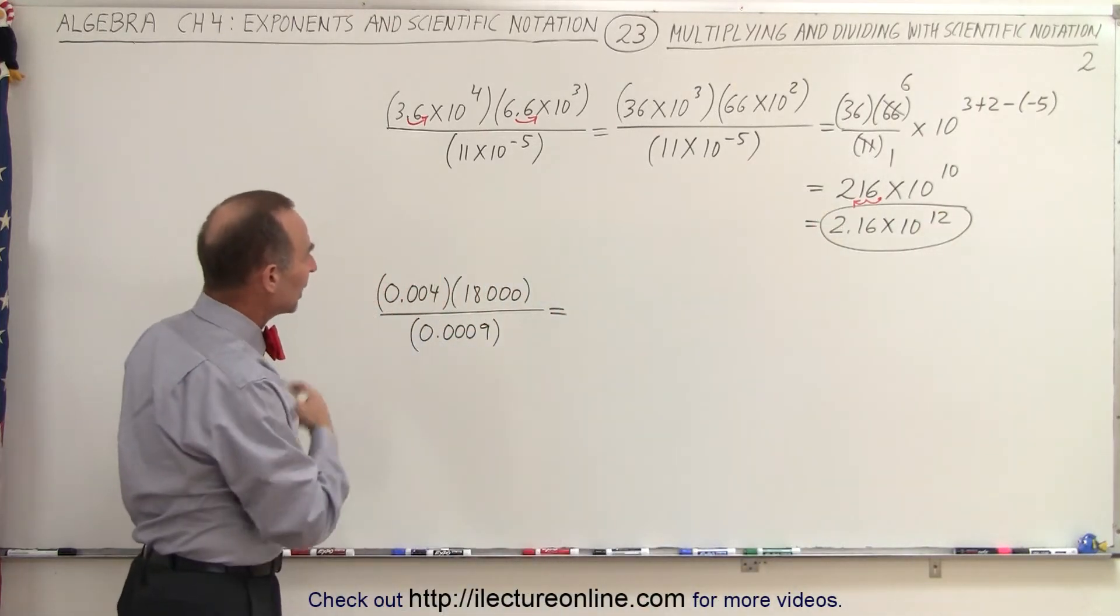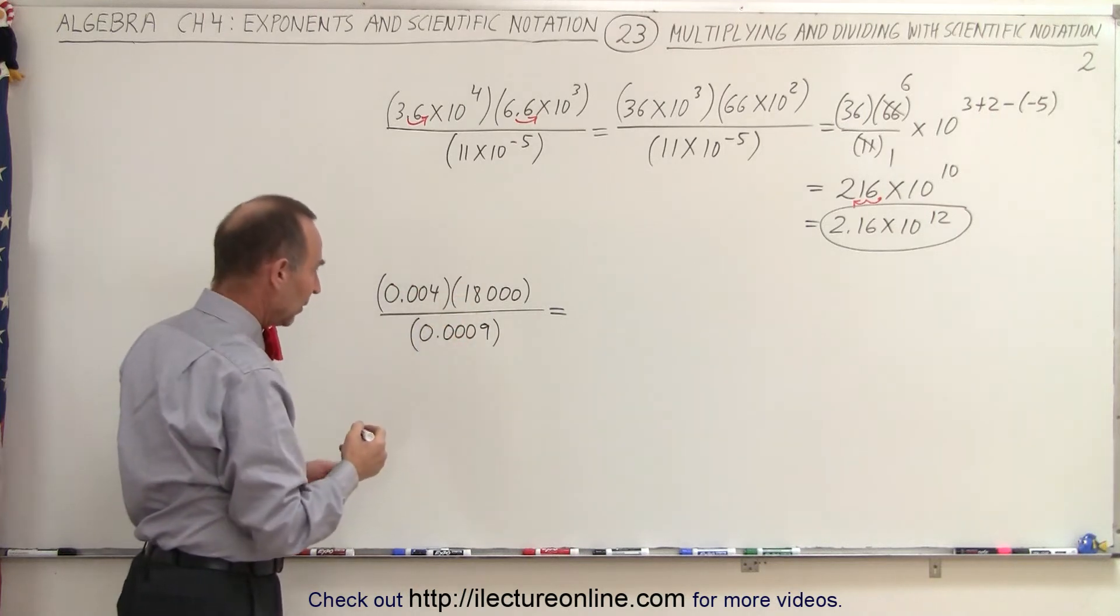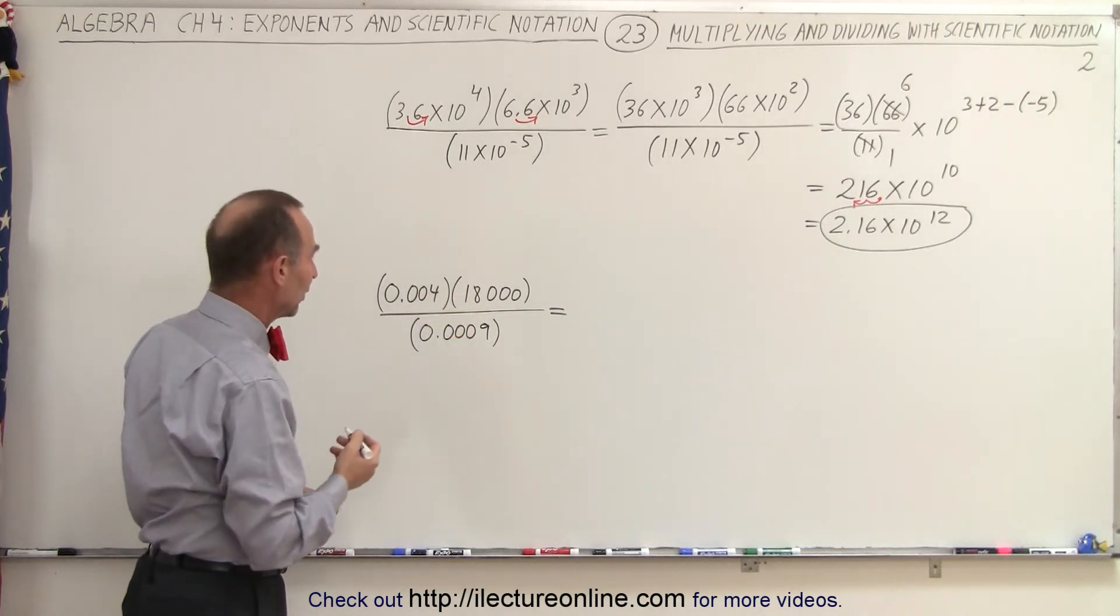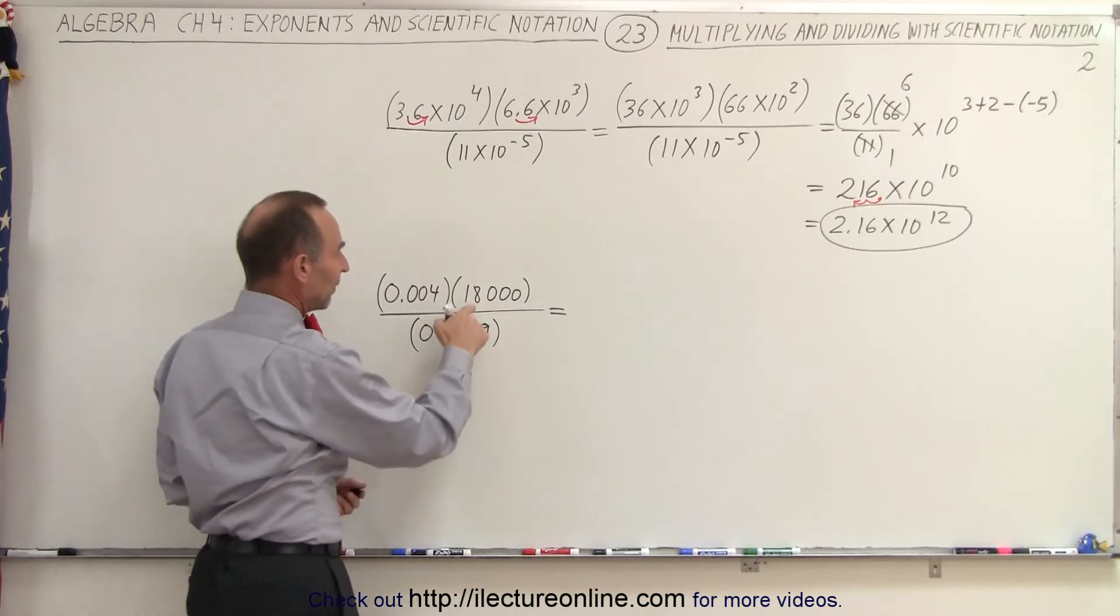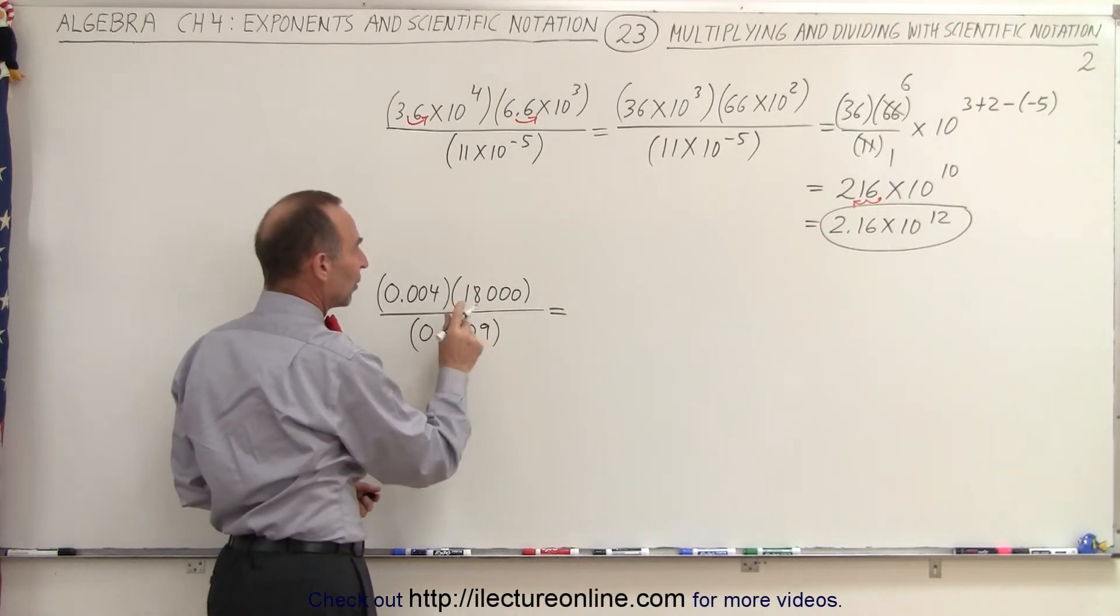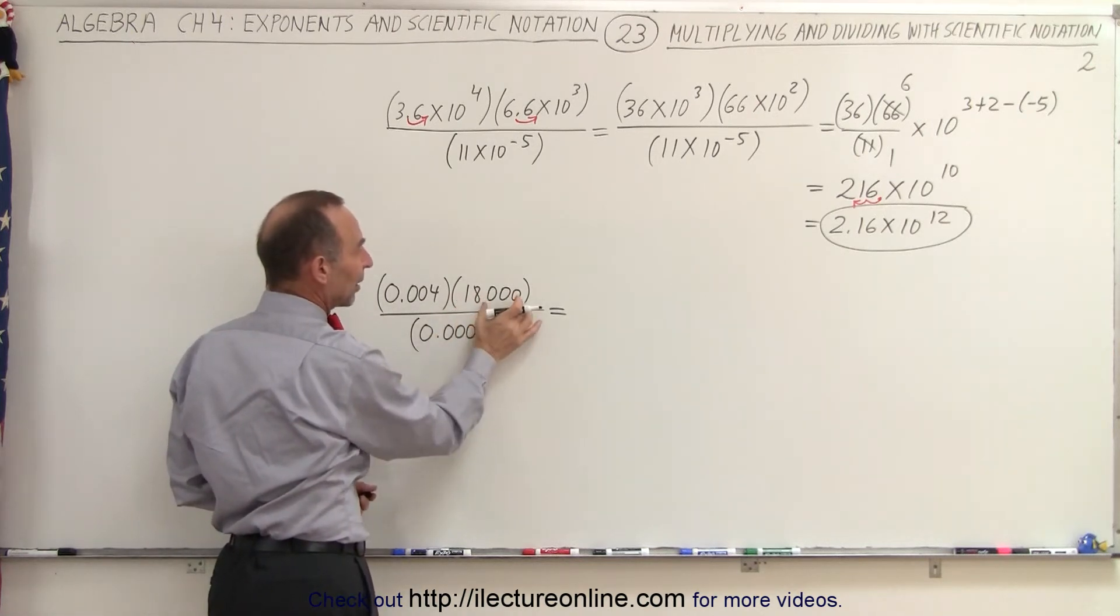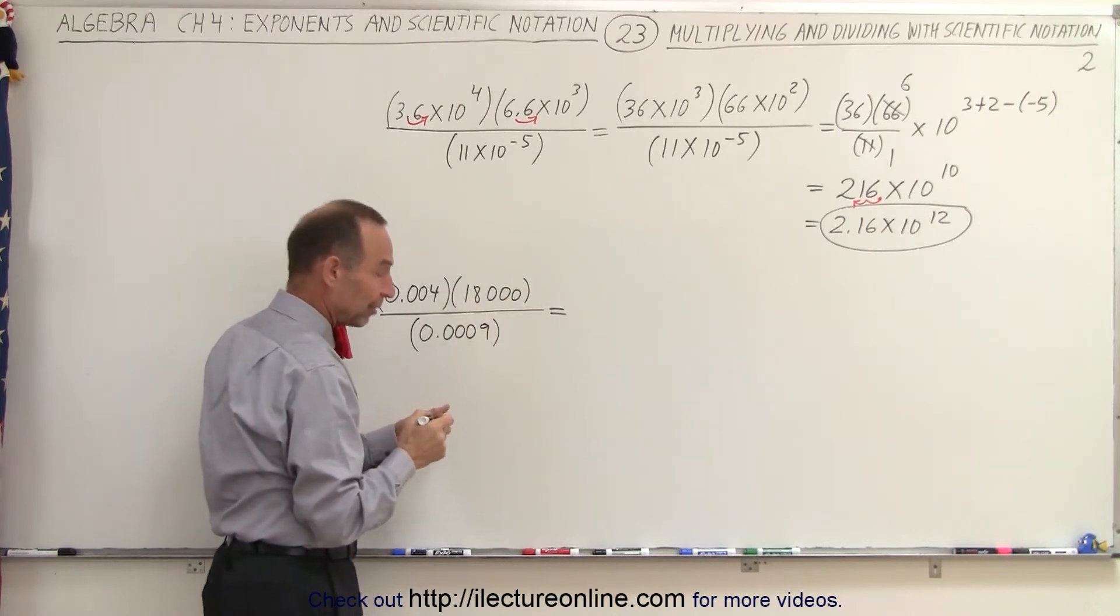Over here, what we need to do is take all three of them and write them as scientific notation. But again, since we have an 18 there and a 9, it's better to keep it as 18 times 10 to the third instead of 1.8 times 10 to the fourth. Let me show you what I mean here.